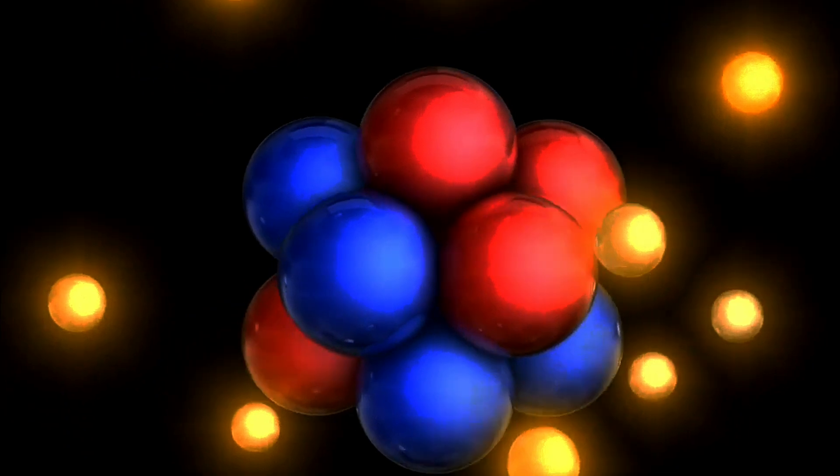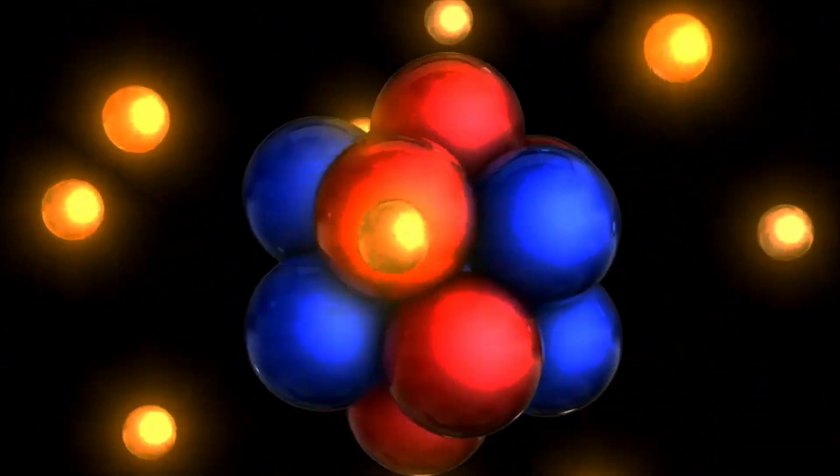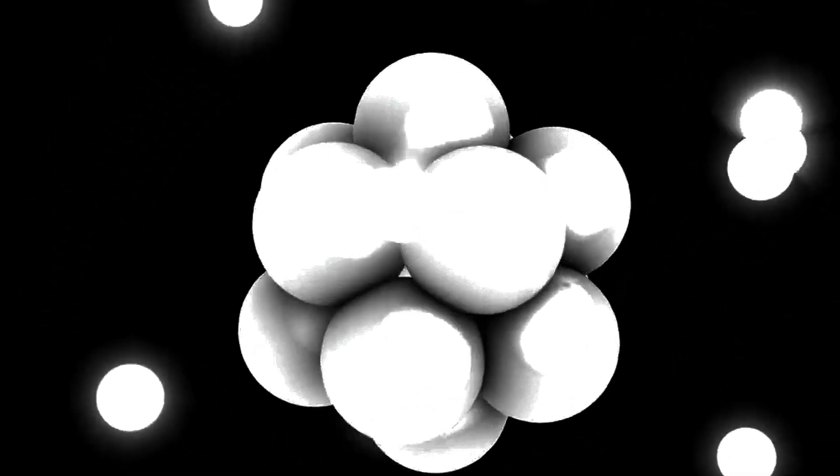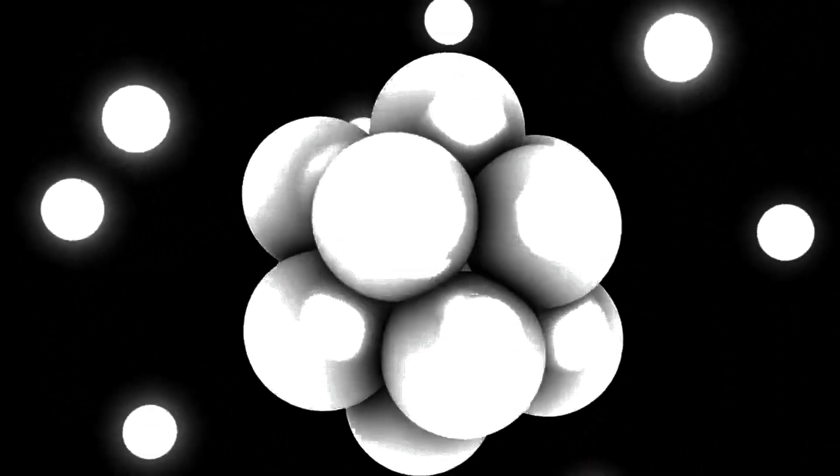As we move across the periodic table, the number of electrons increases, and so does the complexity of the orbitals. Each element has a unique arrangement of electrons in its orbitals, which determines its chemical properties.